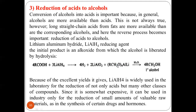Next is reduction of acids to alcohols. Conversion of acids into alcohols is important because long straight-chain acids from fats are more available than the corresponding alcohols, making the reverse process — reduction of acid to alcohol — important. The reducing agent is lithium aluminum hydride. The initial product is an alkoxide, from which the alcohol is liberated by hydrolysis. Lithium aluminum hydride gives excellent yield and is generally used.